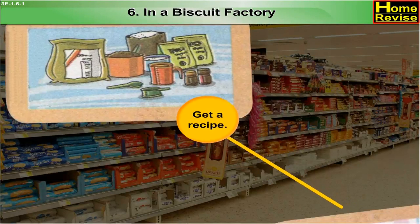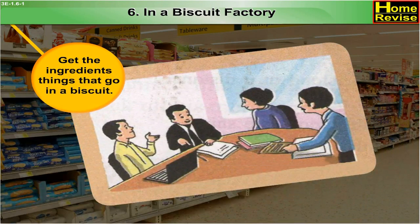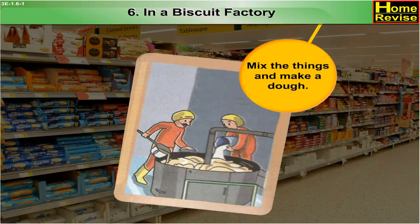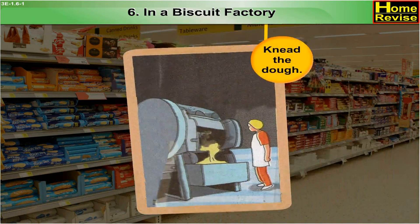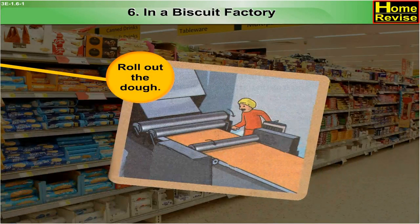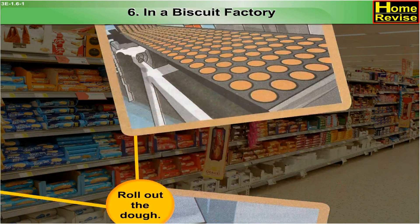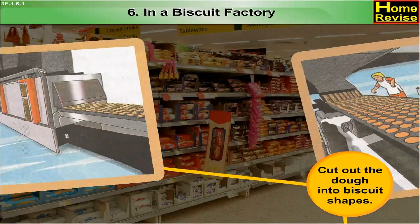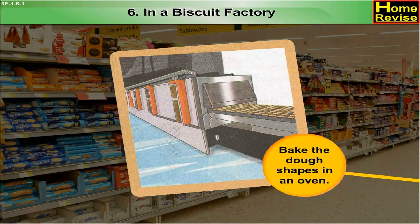Get a recipe. Get the ingredients — things that go in a biscuit. Decide how much of each to use. Weigh each ingredient. Mix the things and make a dough. Knead the dough. Roll out the dough. Cut out the dough into biscuit shapes. Bake the dough shapes in an oven.